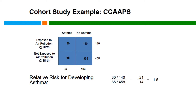Here is real data showing the relative risk for developing asthma at age seven. Looking at the two-by-two table: 140 children exposed to air pollution at birth remained in the study at age seven — 30 had asthma and 110 did not. 458 children not exposed to air pollution at birth remained — 65 had asthma and 393 did not. The incidence among the exposed was 30/140 or 0.21, and among the unexposed was 65/458 or 0.14. The relative risk is 0.21 over 0.14, which equals 1.5 — a 50% increased risk of developing asthma among children exposed to air pollution at birth.